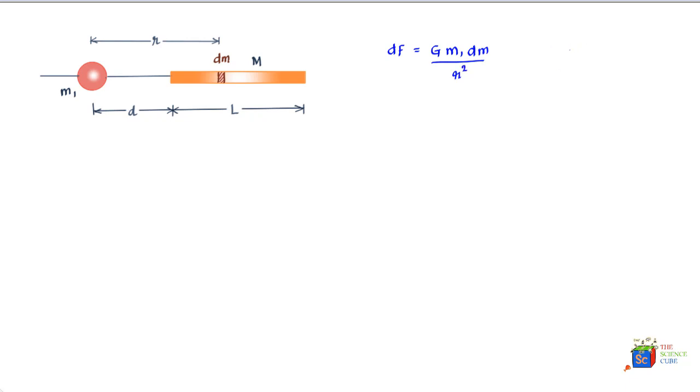Now we also know that the mass per unit length of this rod would be nothing but M/L. And therefore the mass of the small section which we are calling dm right now would be M/L, which is the mass per unit length, times the length of this mass. Let's say the length of this mass is dr. So go ahead and label this length as dr.